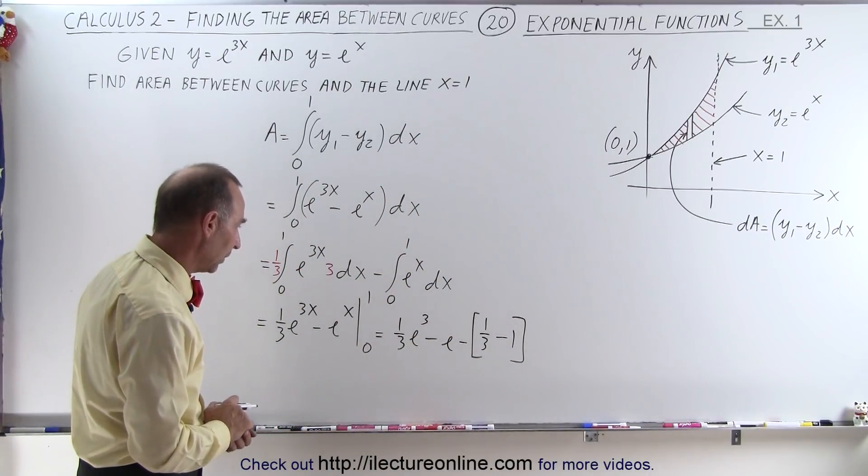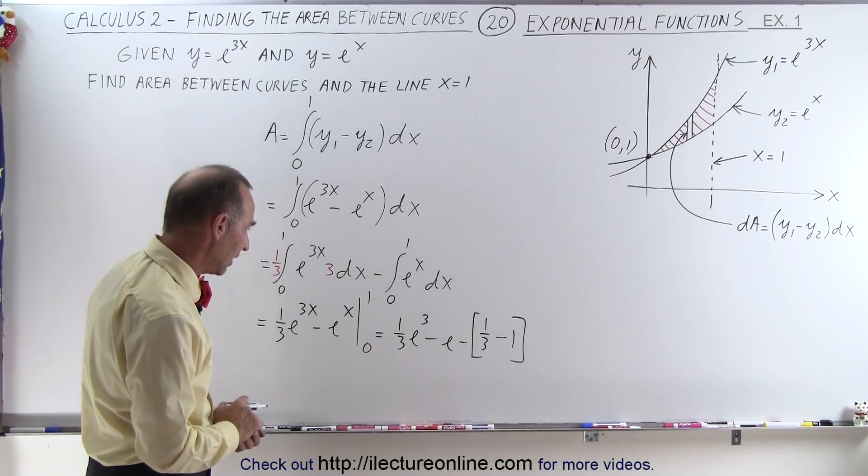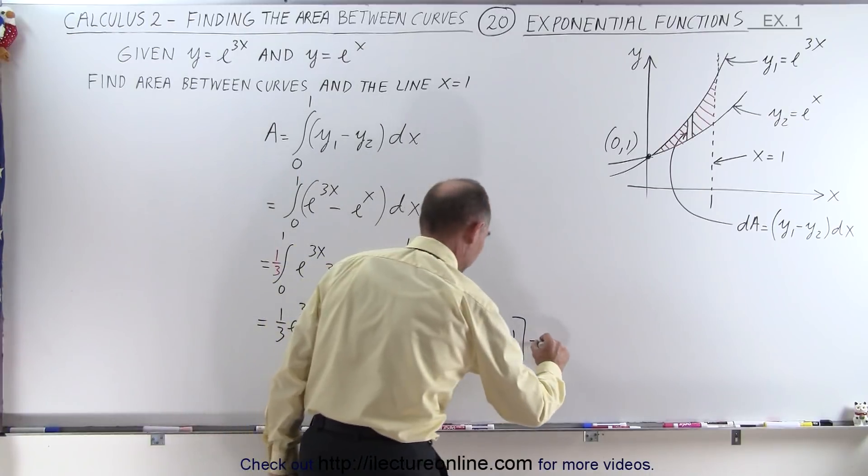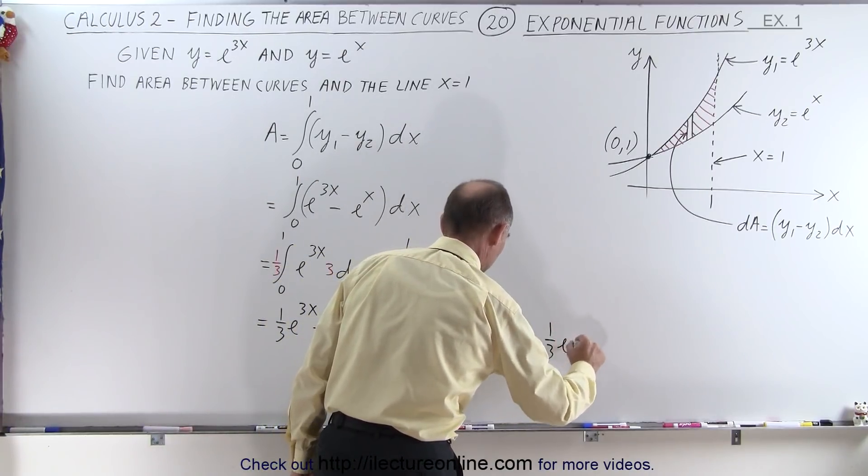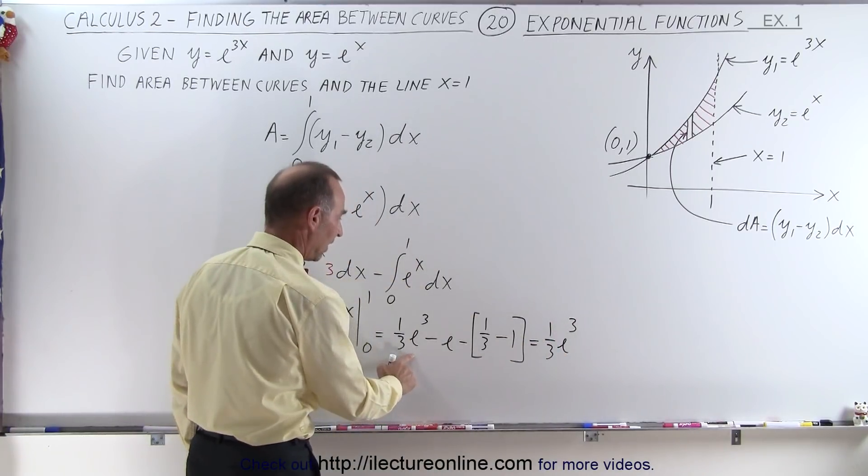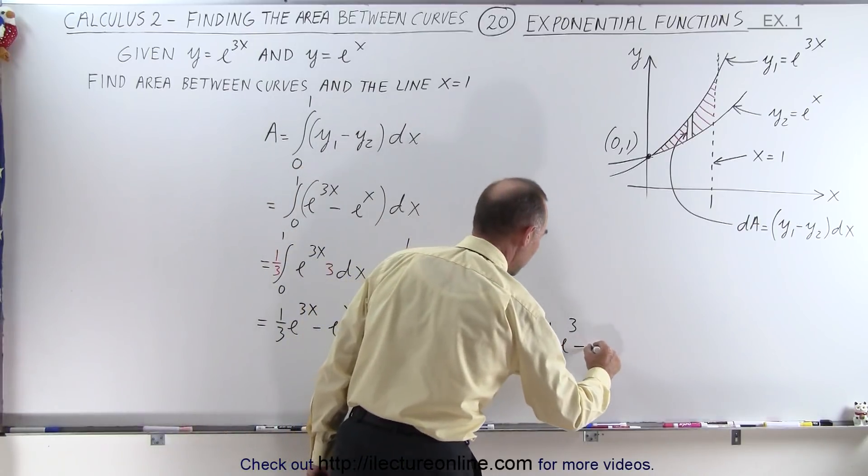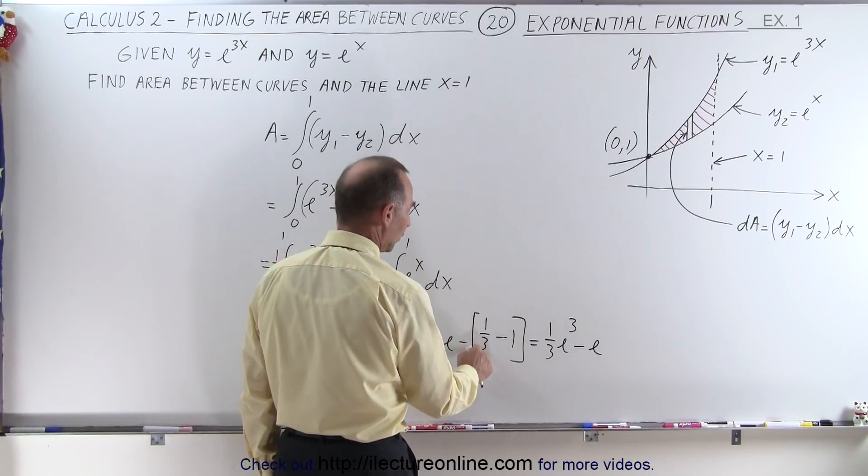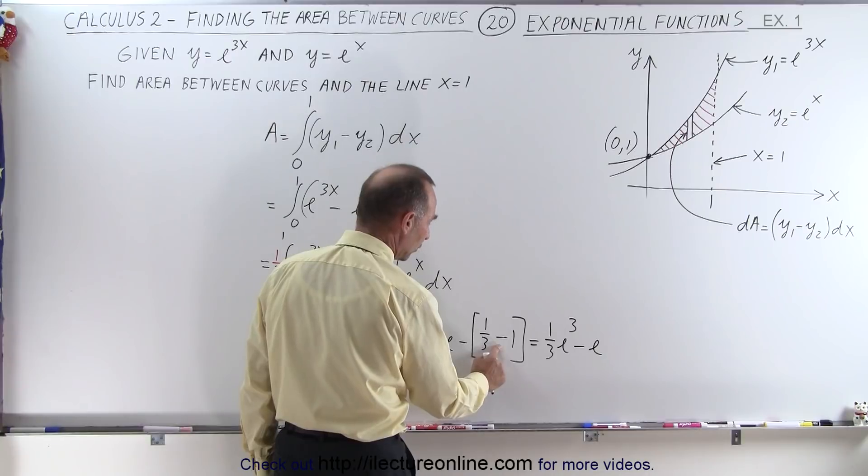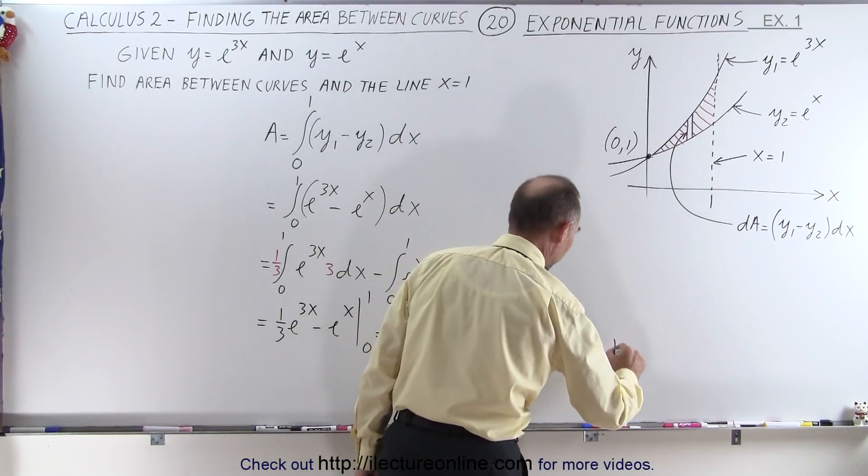All right, so we need to clean that up a little bit. Let's see here, we have 1 third e to the 3rd power, so that stays the same. I have a minus e, and here I have a 1 third minus 1, which is minus 2 thirds, times a minus 1, which is plus 2 thirds.